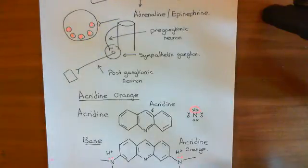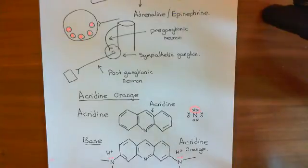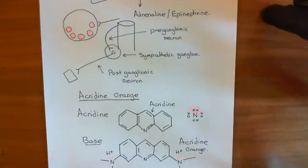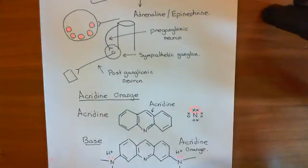Welcome to this next video in which we are discussing total internal reflection fluorescence microscopy. We're discussing the properties of this dye, Acridine Orange, and why it's ideal for staining vesicles containing neurotransmitter — in this case, adrenaline slash epinephrine.